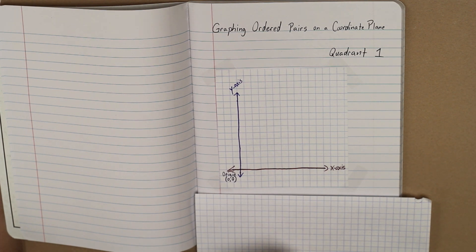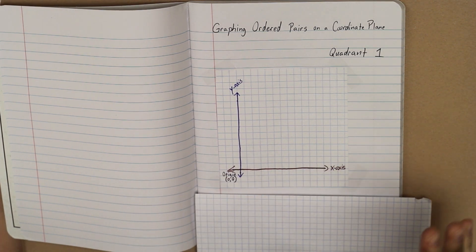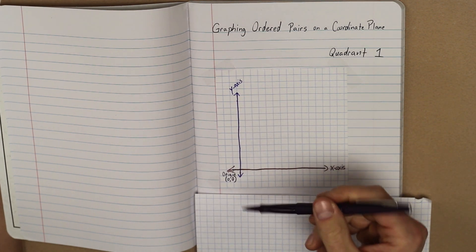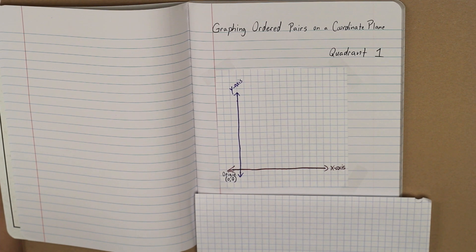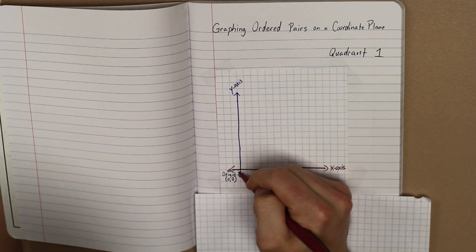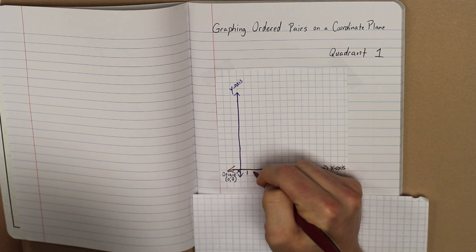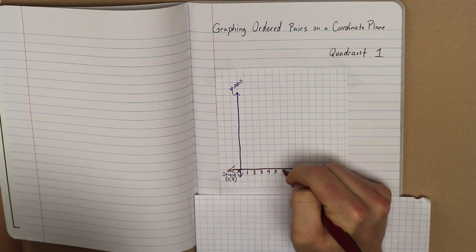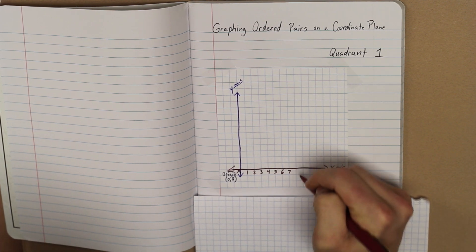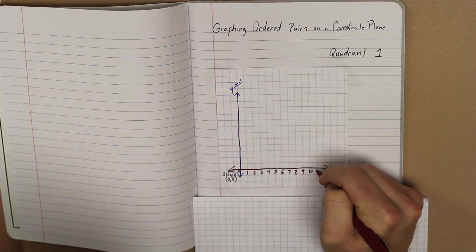The x-axis can go left beyond the origin to get negative numbers, but we aren't worried about that. It goes to the right to get positive numbers. These numbers will continue counting from the origin. We're going to count: 1, 2, 3, 4, 5, 6, 7, 8, 9, 10, and 11.